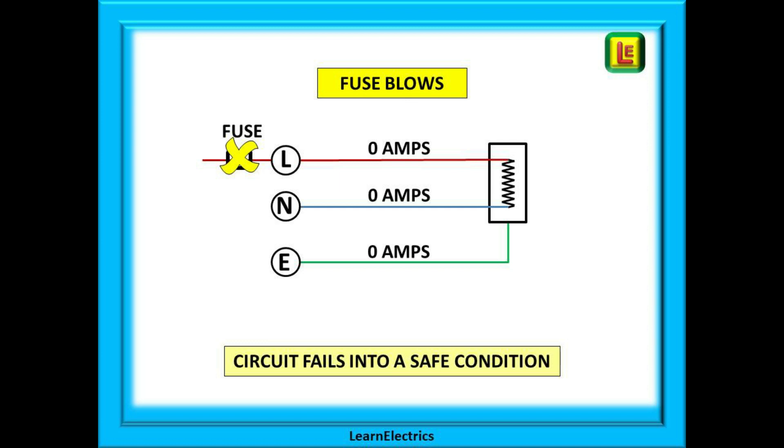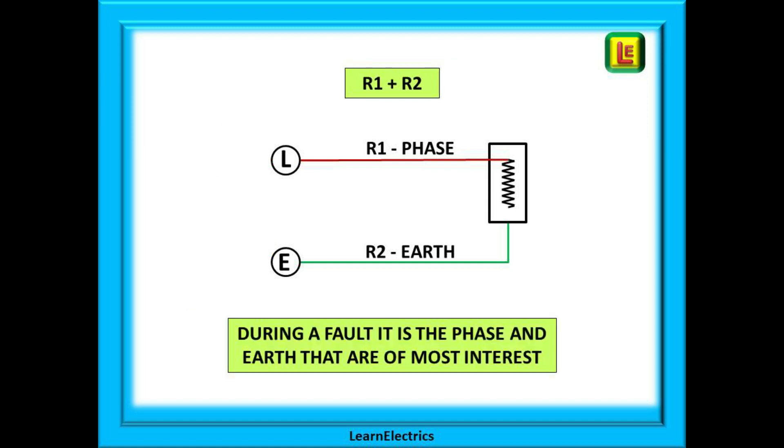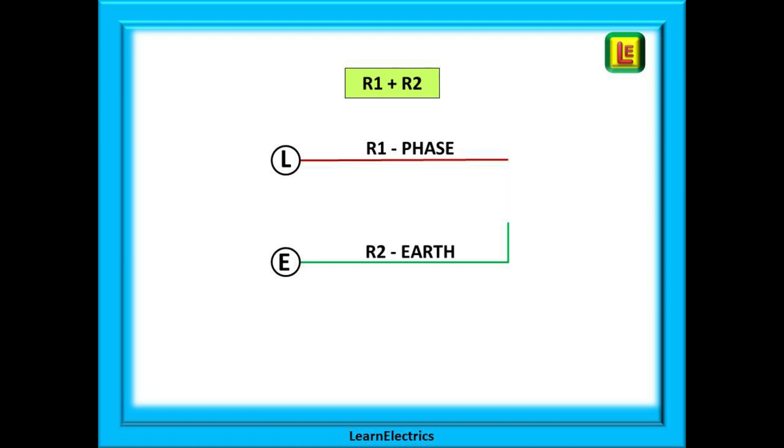During a fault the neutral plays very little part in what is happening, so let us remove the neutral on this drawing. We are left with just R1 the phase wire and R2 the earth wire, and it is the massive currents that are flowing around R1 and R2 that cause the fuse to blow or the breaker to trip. Therefore during a fault it is the phase and earth that are of most interest. We want to know what the resistance is of these two wires as resistance is the thing that will reduce the amount of current flowing. Resistance is the enemy.